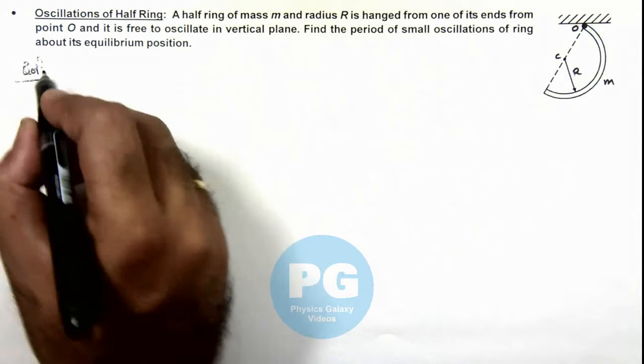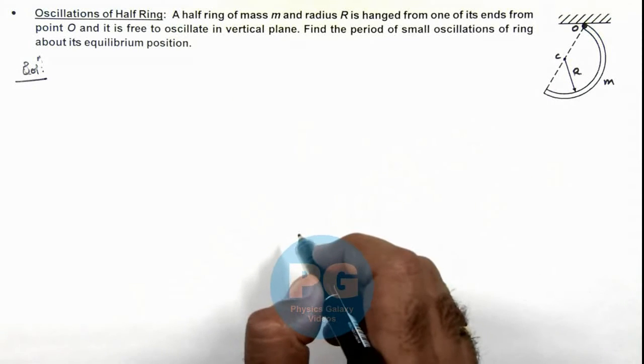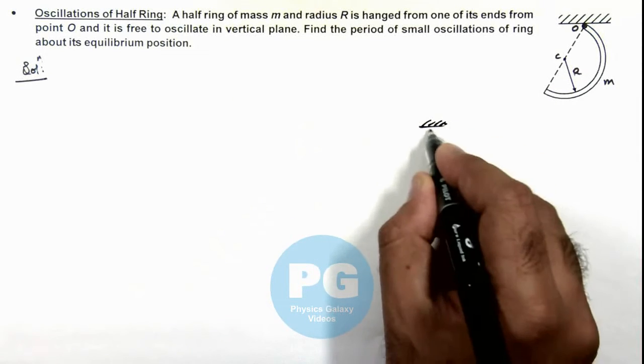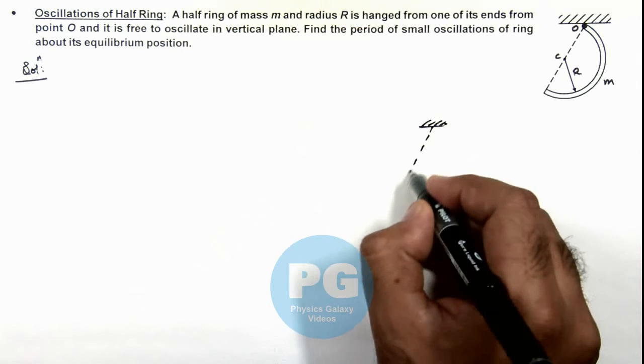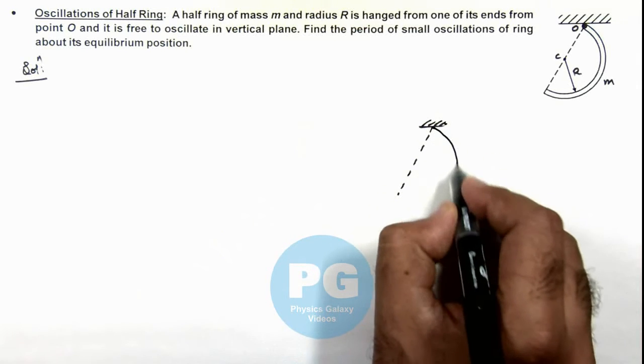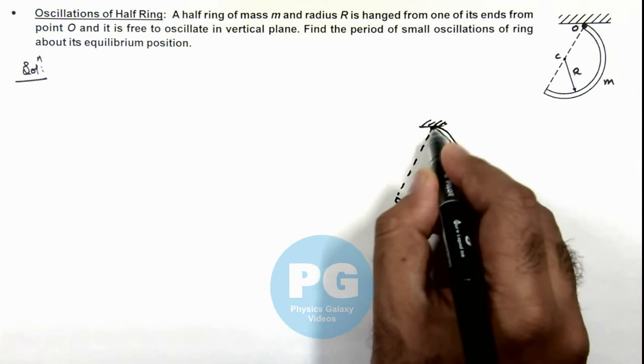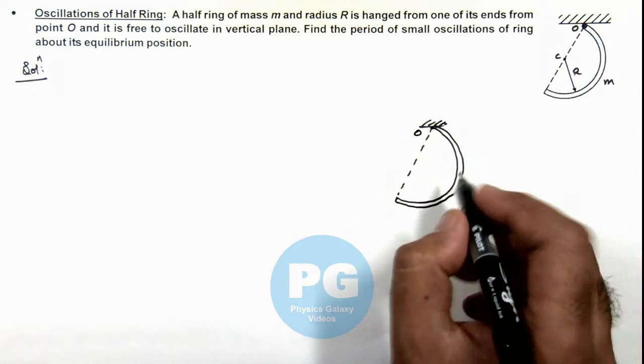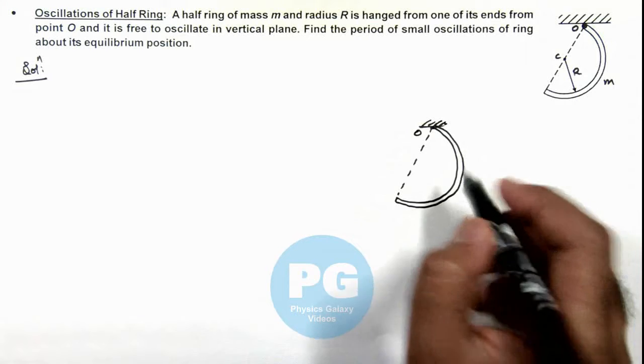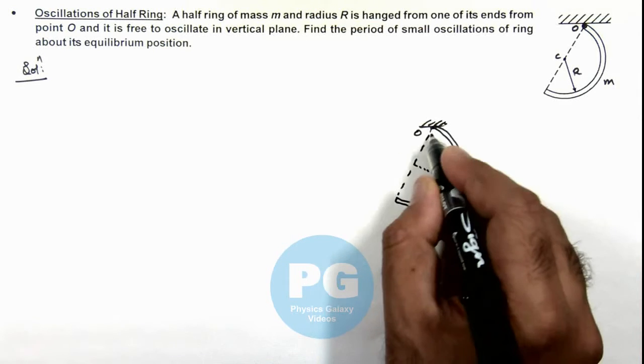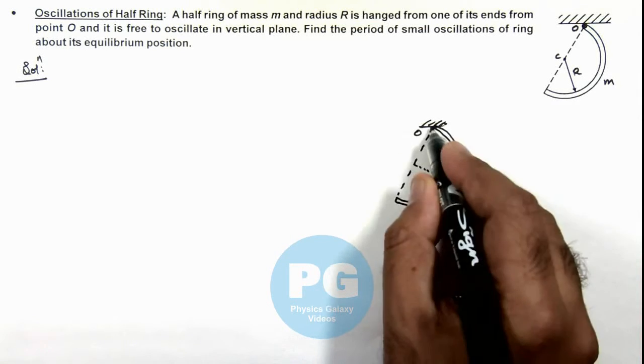In this situation we can consider this whole system as a compound pendulum. If we redraw the figure, this is the diameter of half ring and this is the ring, and at point O it is hinged. Obviously in free suspension it is suspended in a way that its center of mass is vertically below the point of suspension.